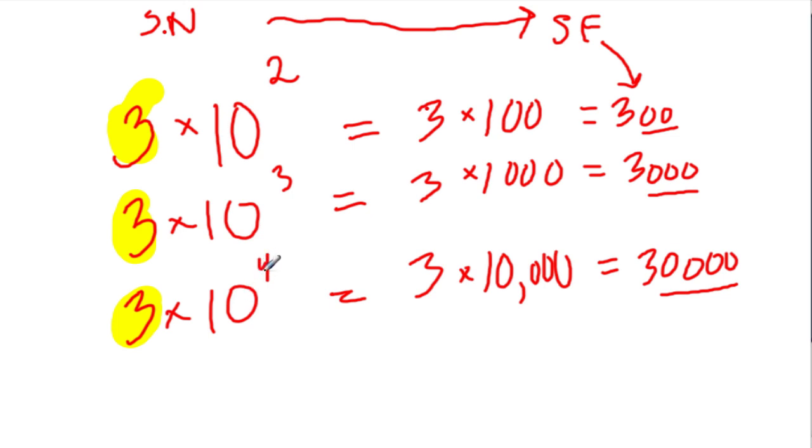Because 10 to the fourth is 10,000, so this is just 30,000, or 3 and 4 zeros, which we have right here. In this number, we have 3 and 3 zeros, 3,000. In this number, we have 3 and 2 zeros, or 300.